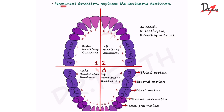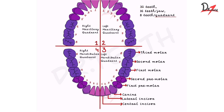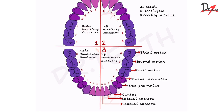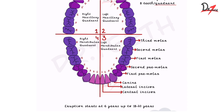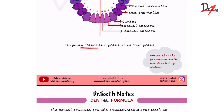Permanent dentition replaces the deciduous dentition. We have 32 permanent teeth — 16 per jaw, meaning 8 teeth per quadrant, numbered one to eight. The same four quadrants apply. In the permanent dentition we have premolars — two premolars per quadrant — and also a third molar. Eruption of permanent teeth starts at 6 years up to 18 to 20 years of age.